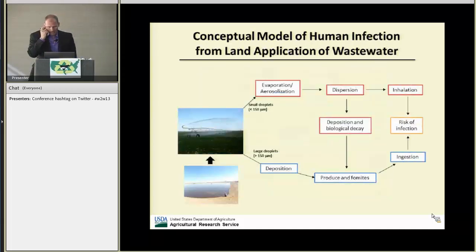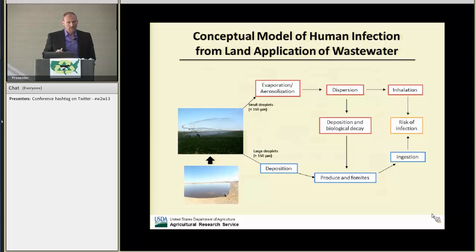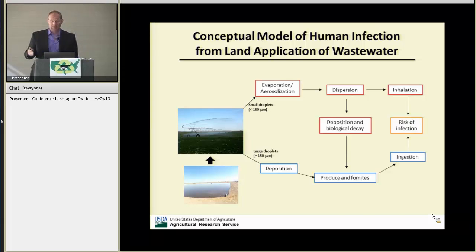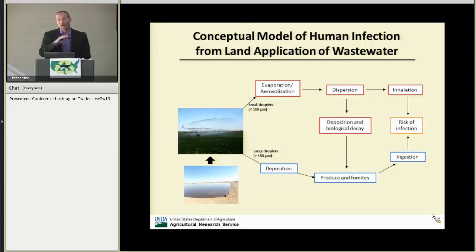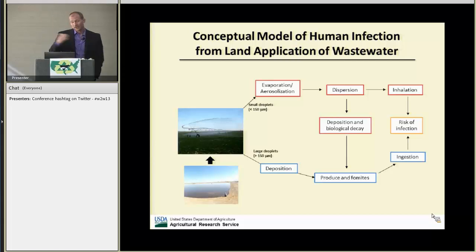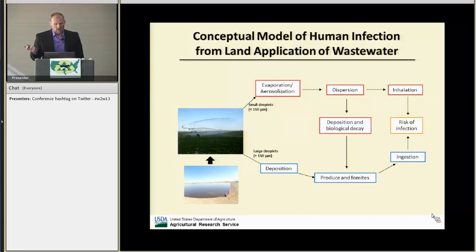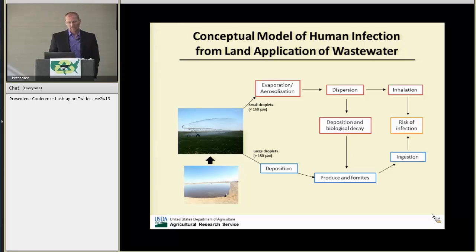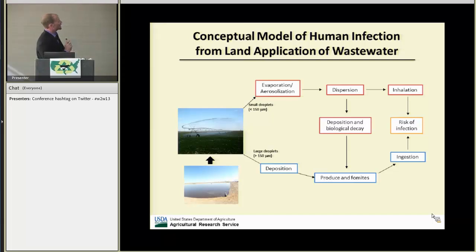I want to talk about spray irrigation of dairy wastewater, because this is another way that pathogens can become aerosolized and pose a potential threat to downwind receptors. In Idaho and many other western states, dairy wastewater is commonly spray-irrigated onto the land — a good way to transfer nutrients to the soil and to manage wastewater. They pump out lagoons in the fall to prepare for winter wastewater volume, and again in the spring.